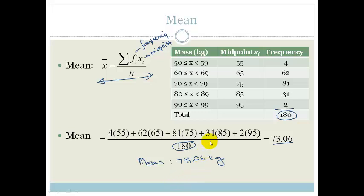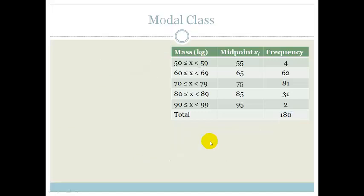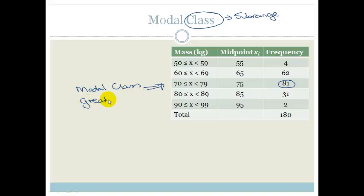Let's look at another way that we can measure the central tendencies of group data. Let's look at the modal class. The modal class is the easiest one of all of these. All we're looking at is which one has the greatest frequency. And obviously, it's this one here with 81. So therefore, this here is the modal class. And class is just another name for a sub range. We're saying that this is the modal class because it has the greatest frequency.